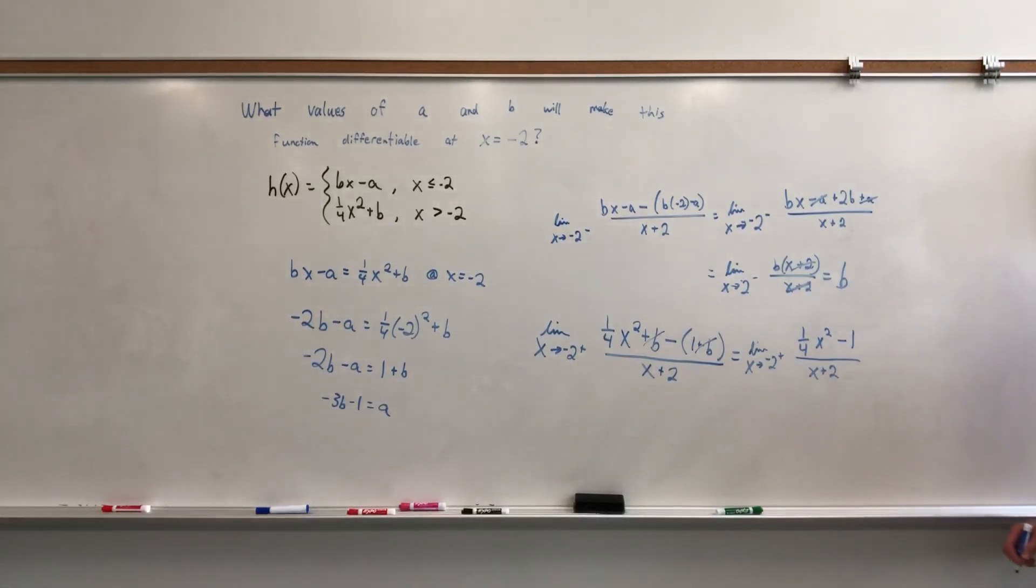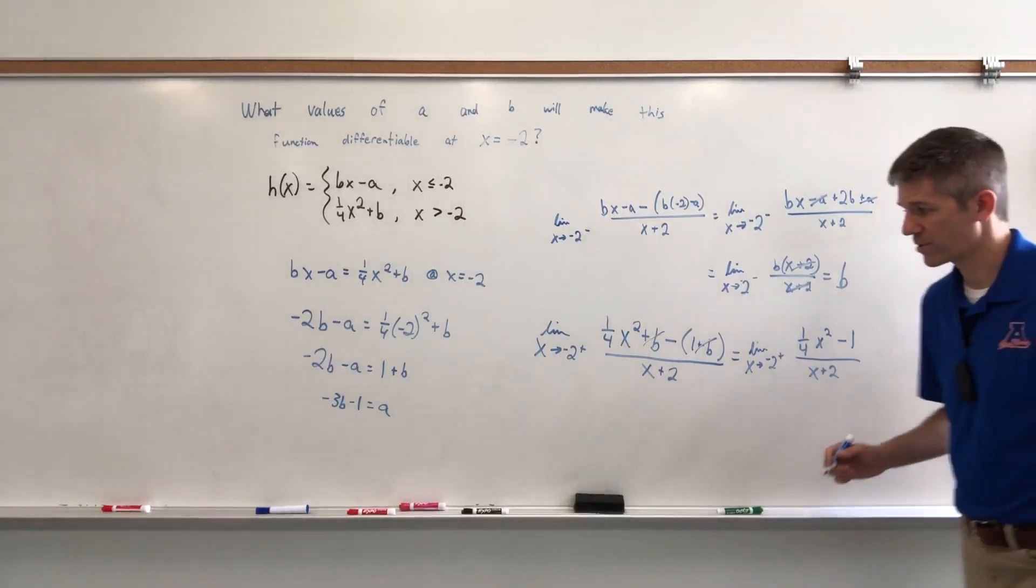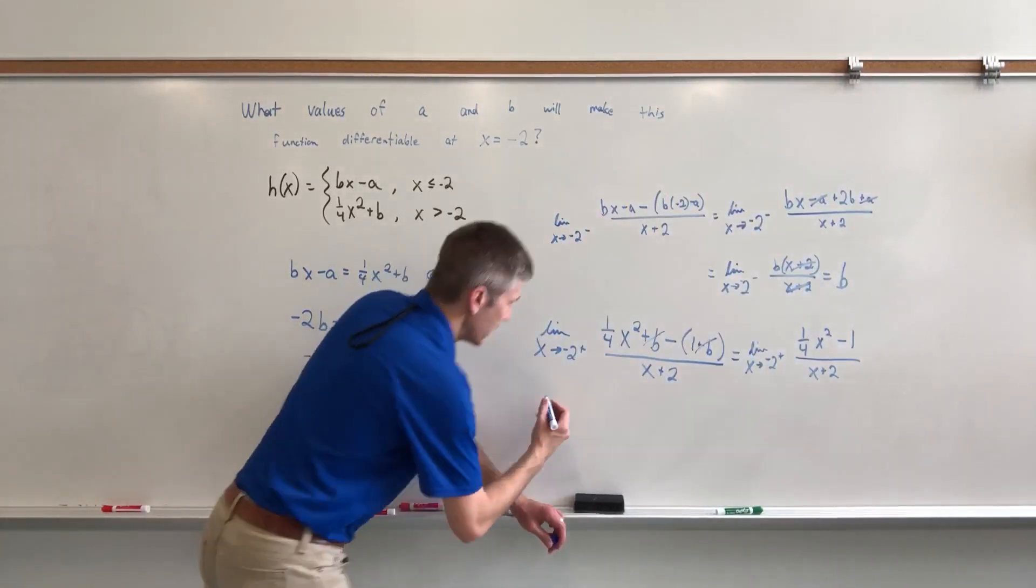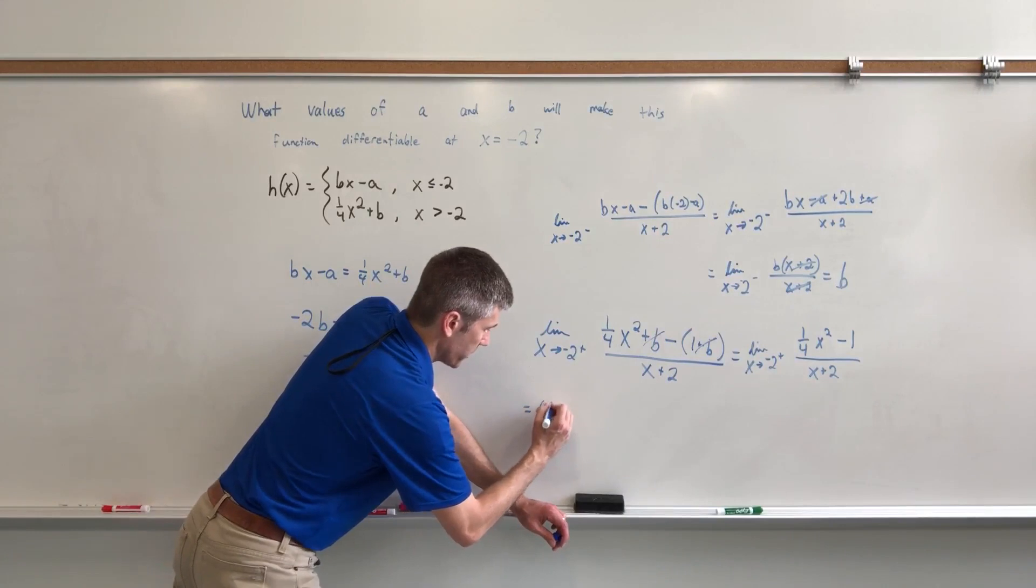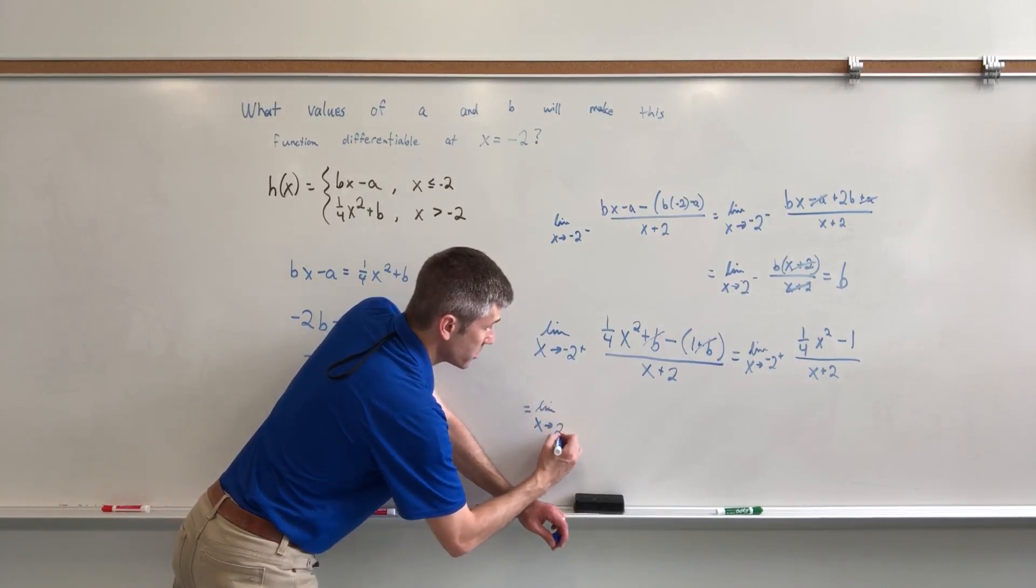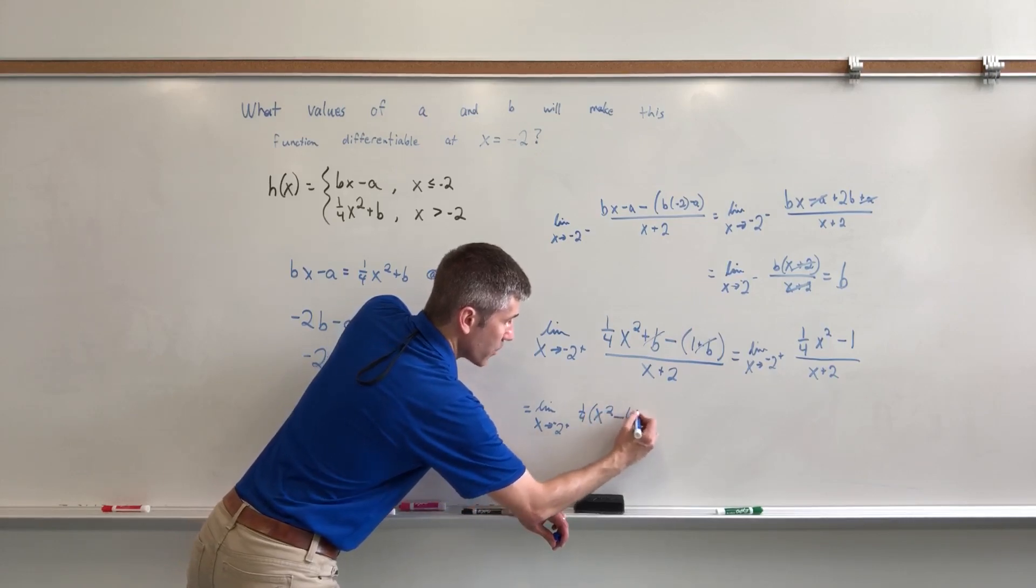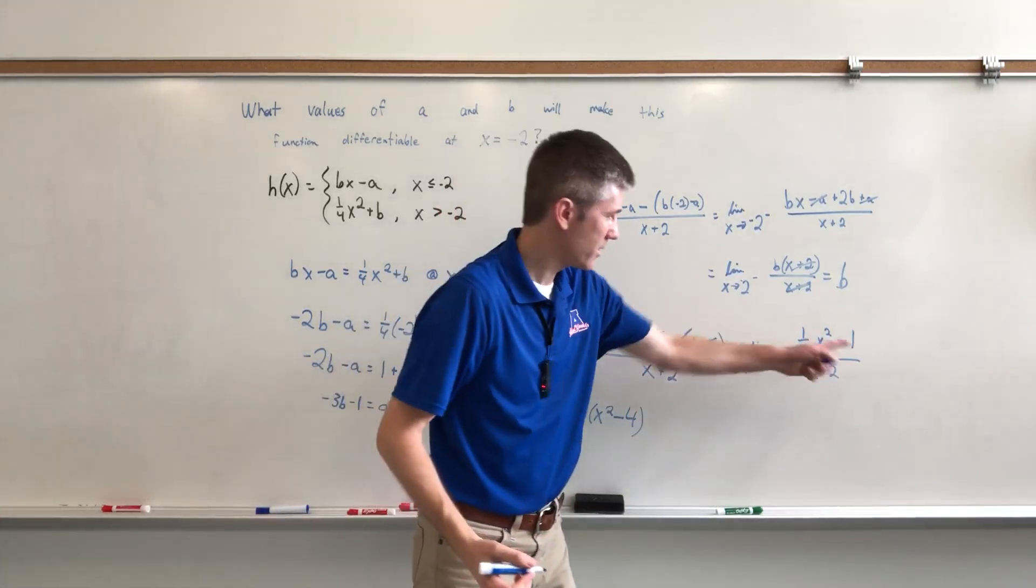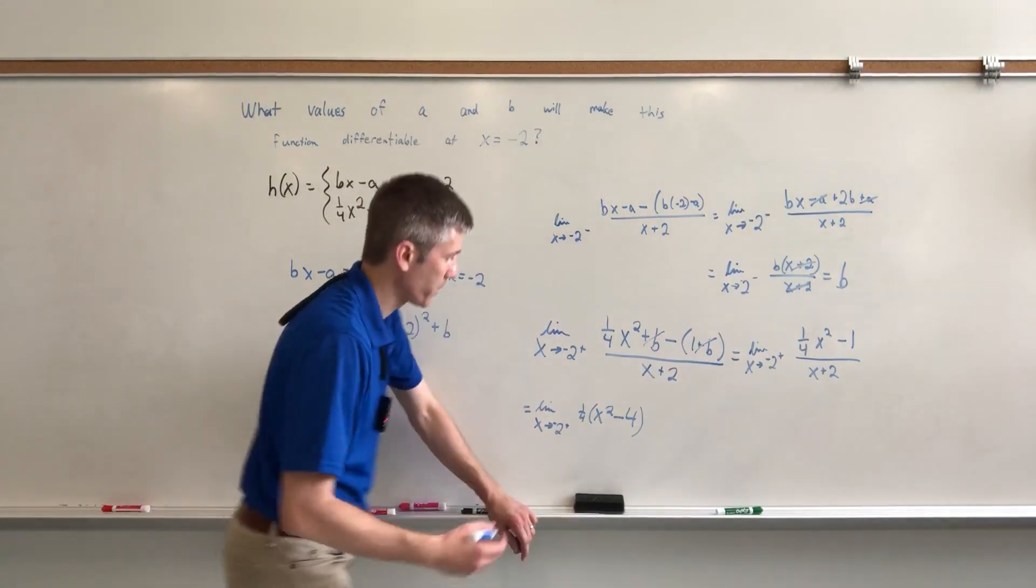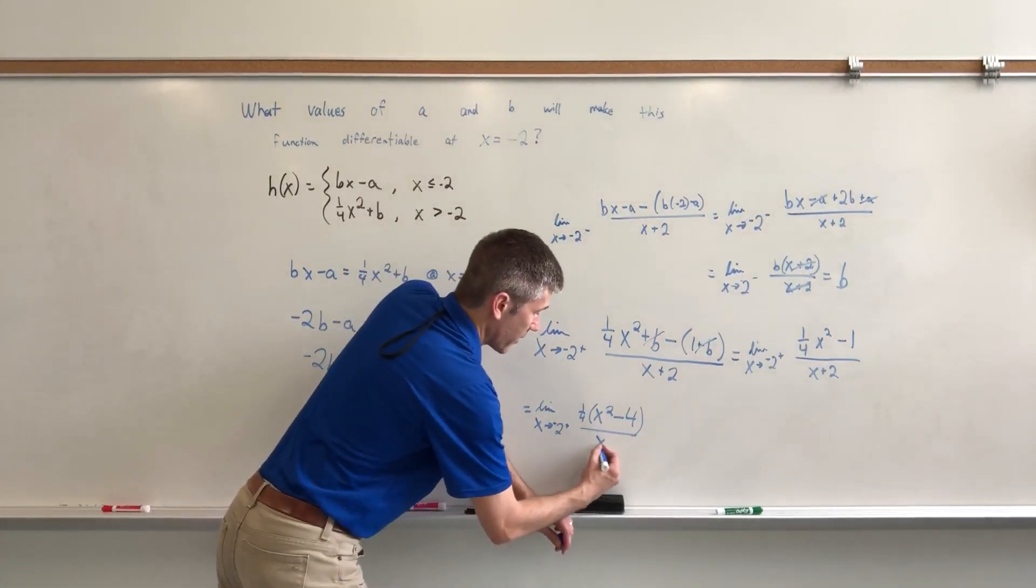Some fancy factoring in the numerator. Stepping off camera here. We're going to factor a one-fourth out of this numerator. And when I do, it's going to give me the limit as X approaches negative 2 from the right, one-fourth X squared minus 4, because 1 divided by one-fourth is going to give me 4. And then I have X plus 2.